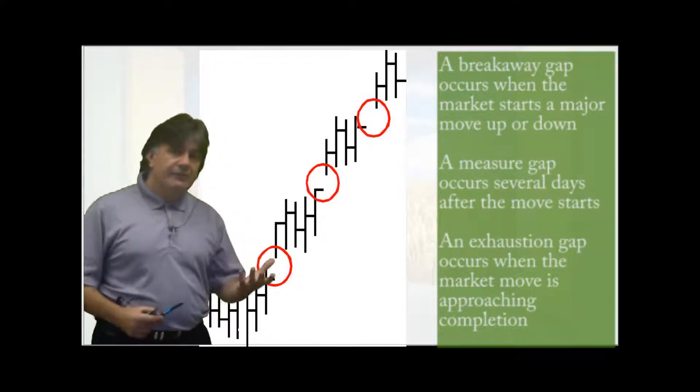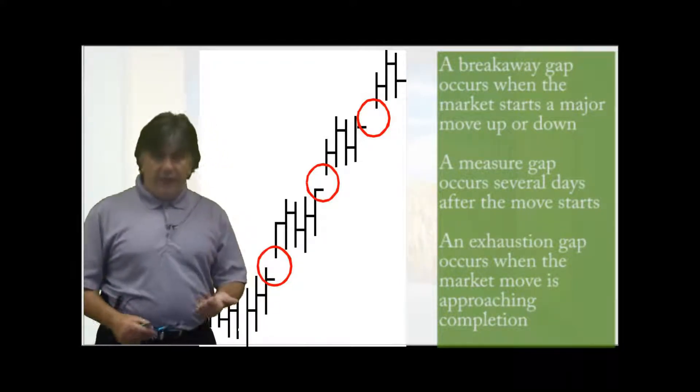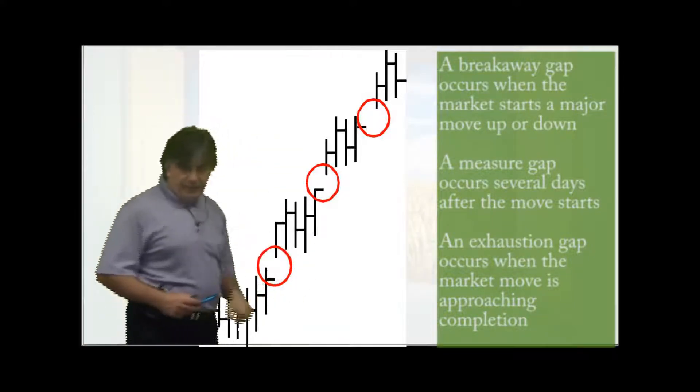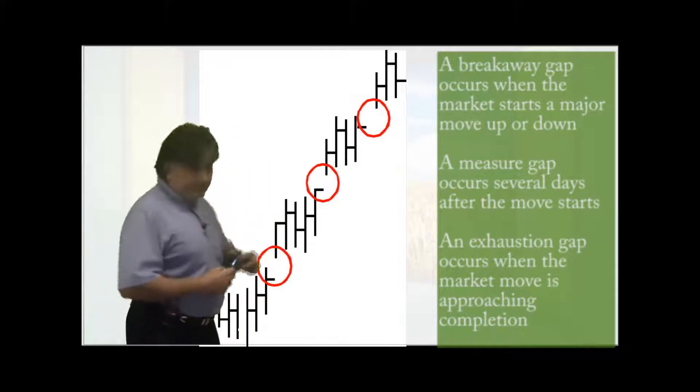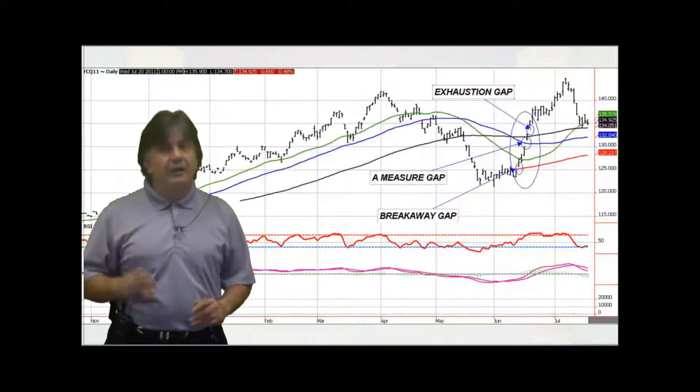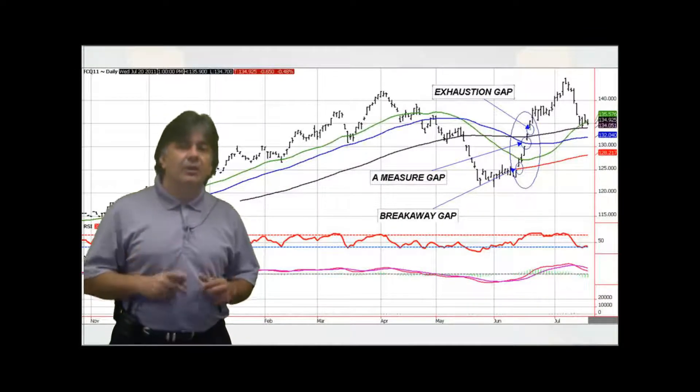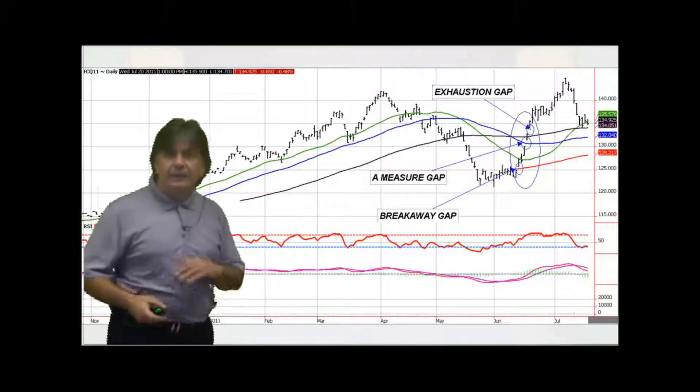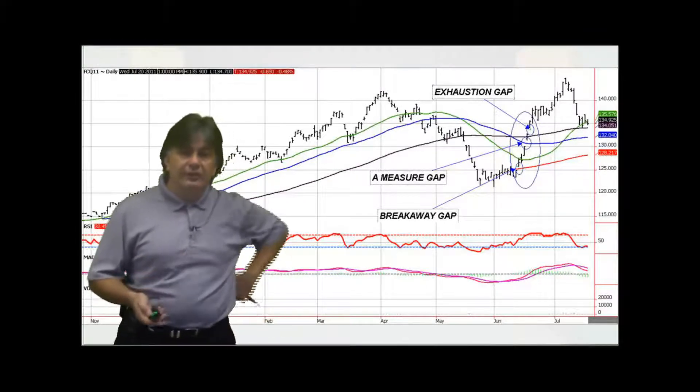There's different stages in chart gaps. There's a breakaway gap, a measure gap, and an exhaustion gap. So the first one is known as a breakaway, the second a measure, and the third is the exhaustion gap. And the exhaustion gap, if you get three in a row, which is rare, but it can happen, that's a signal that this uptrend or downtrend is coming close to an end and there could be a change in trend.